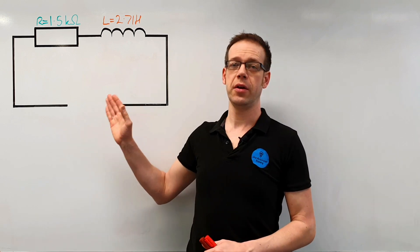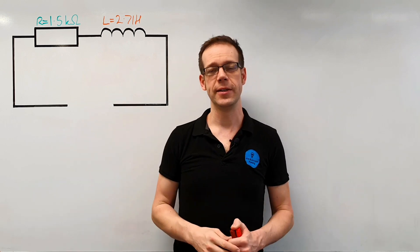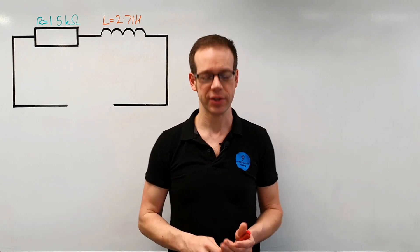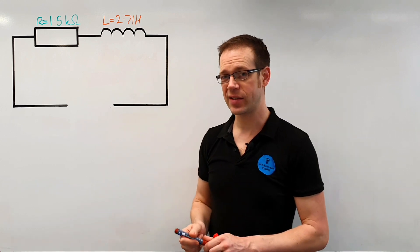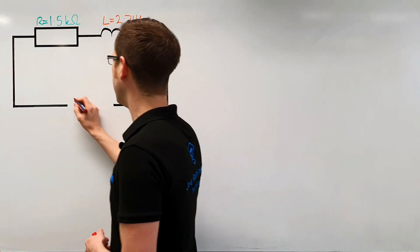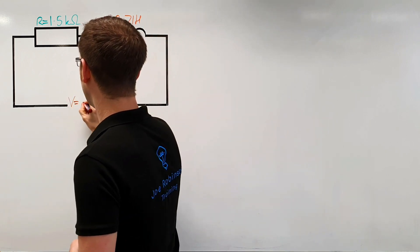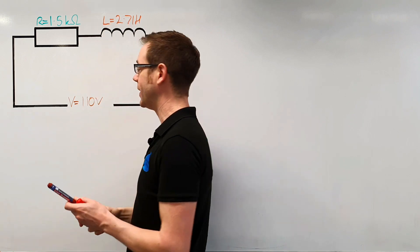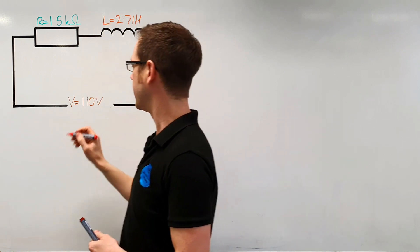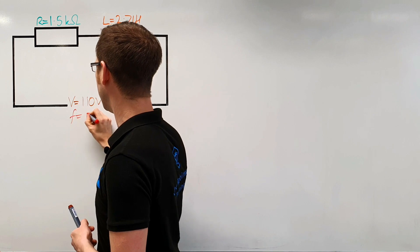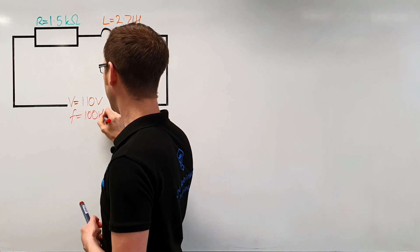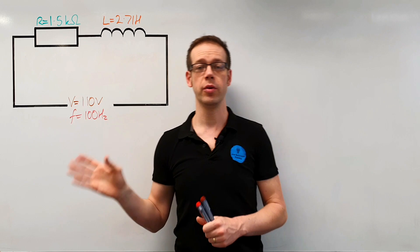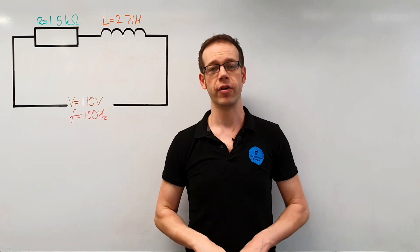We've got the same picture on the board here that you'll see on the worksheet in front of you, but we just need to add some more information. The question tells us that this circuit is being connected to a voltage of 110 volts and an AC circuit that has a frequency of 100 hertz. So we've now got all of the information on the board that we can glean from this question.